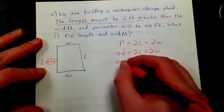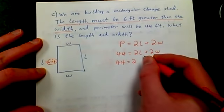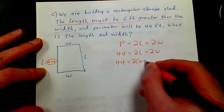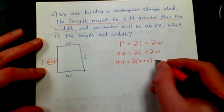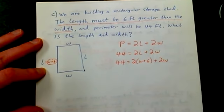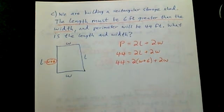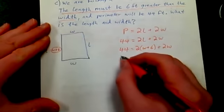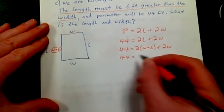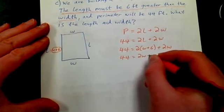Well, this is the key right here. 44 equals 2 times the length, well that's also the same as the width plus 6, plus 2 times the width. Now look, our equation only has W as a variable. We can solve for W now. A lot of times you might have to do this: make a replacement like this. 44 equals 2W plus 12 plus 2W.